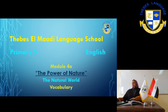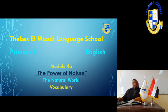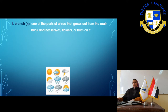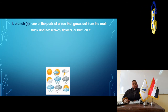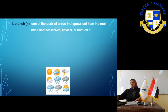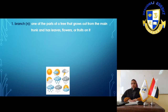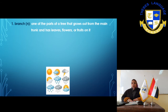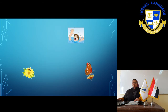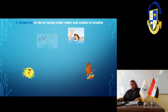Going back to the PowerPoint. We have some new vocabulary. The word branch — branch is one of the parts of the tree that grows out from the main trunk and has leaves coming out from it. The word climate — climate is the general weather conditions in a particular place. For example, in America, the climate is cold; in Egypt, the climate is sunny. The word drown — drown means to die by being underwater and unable to breathe.